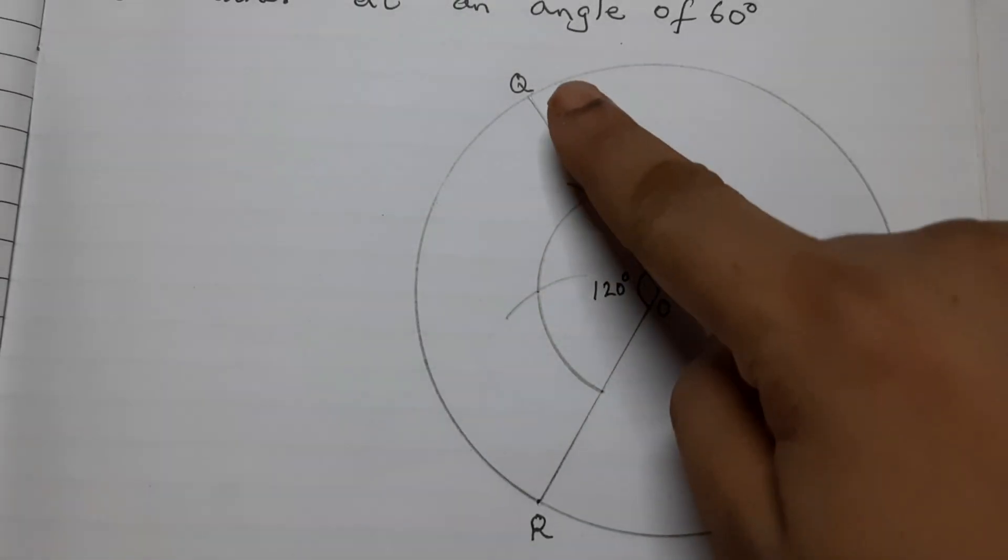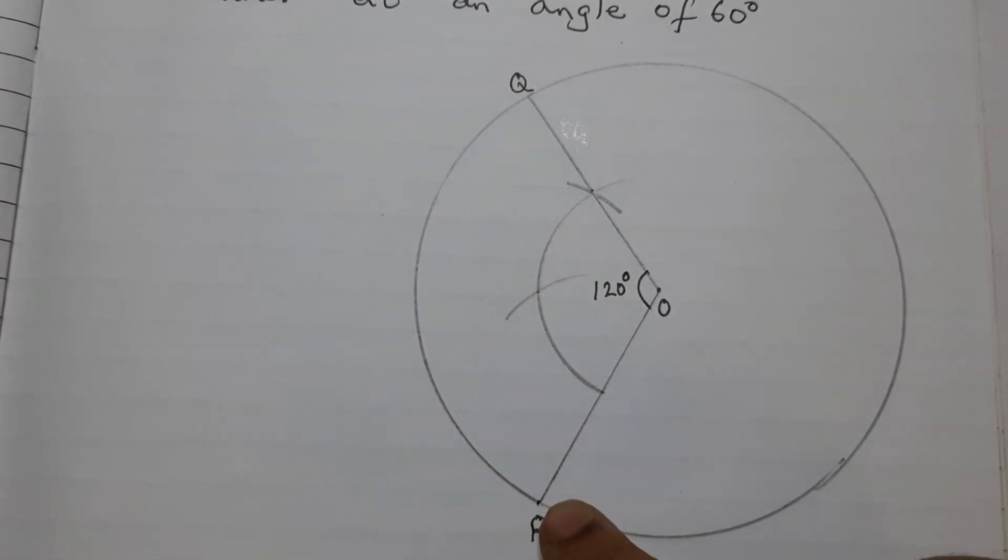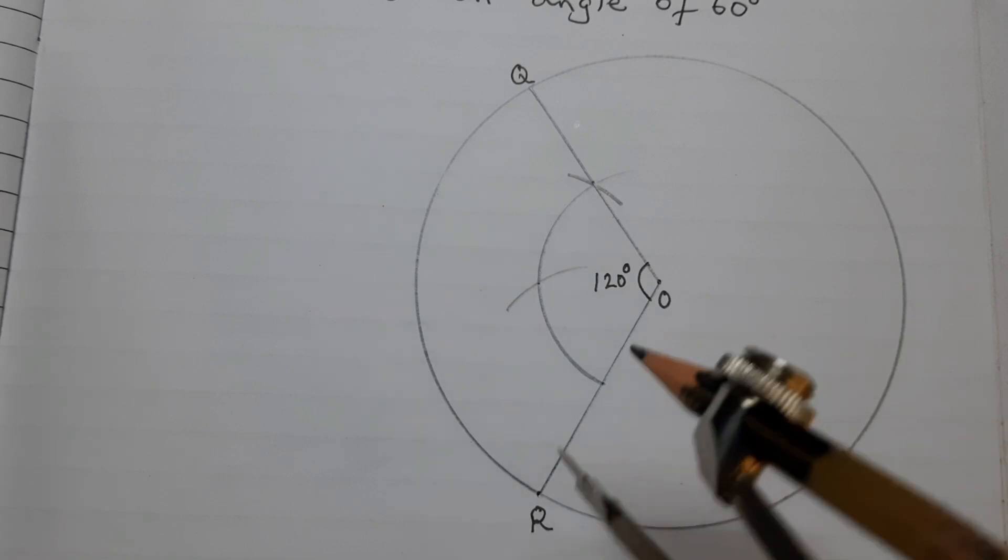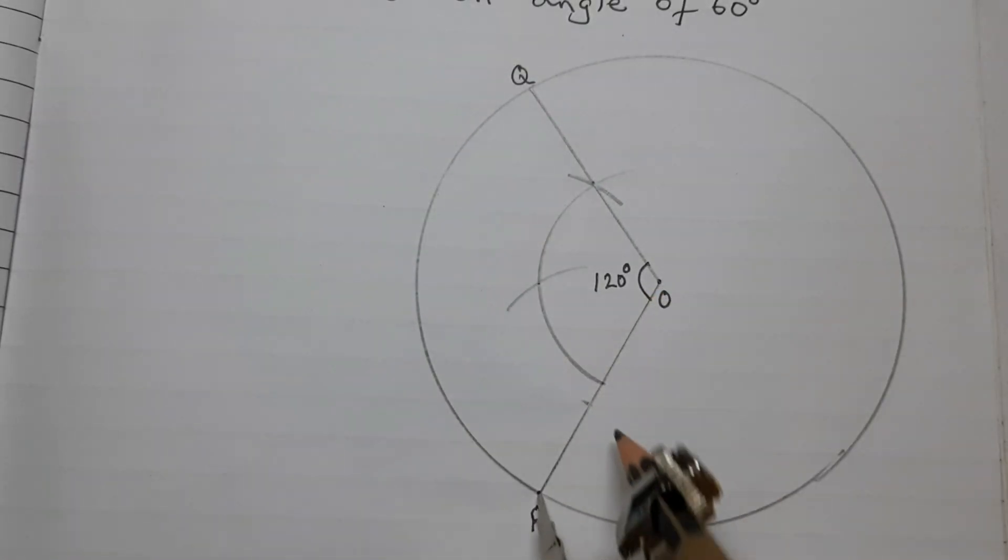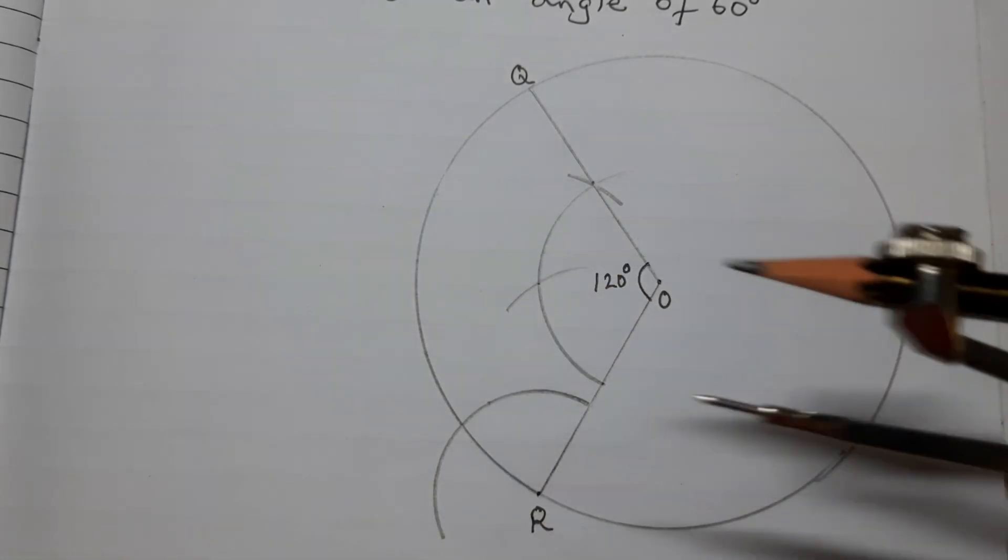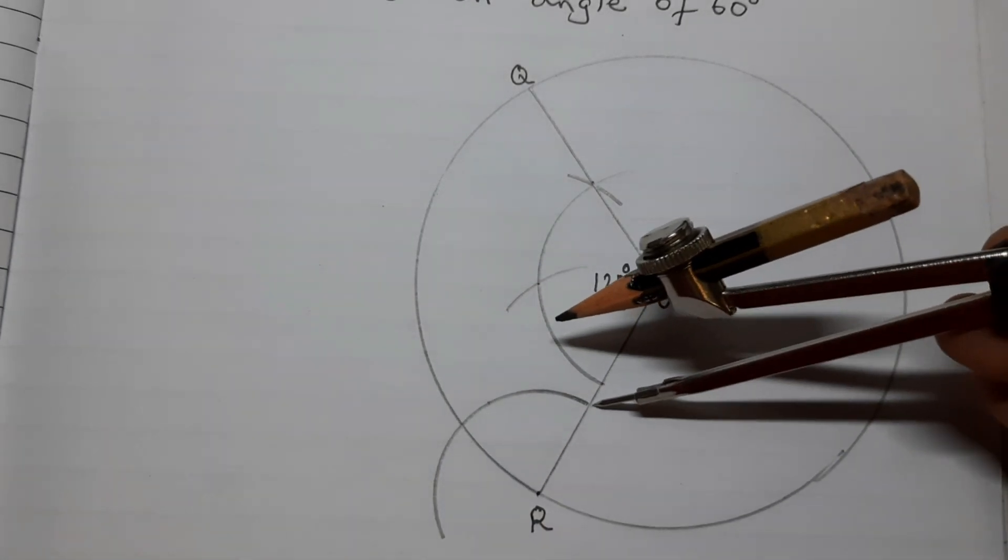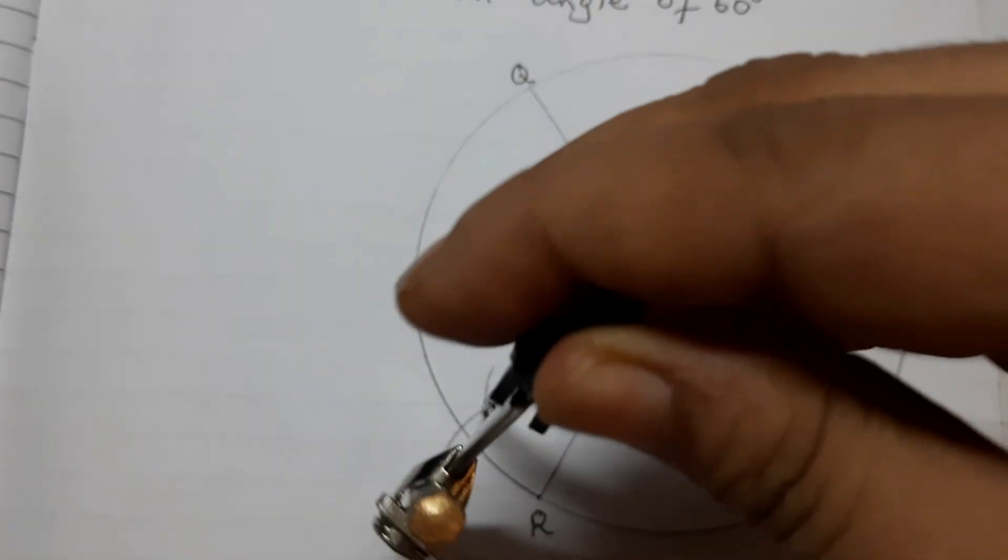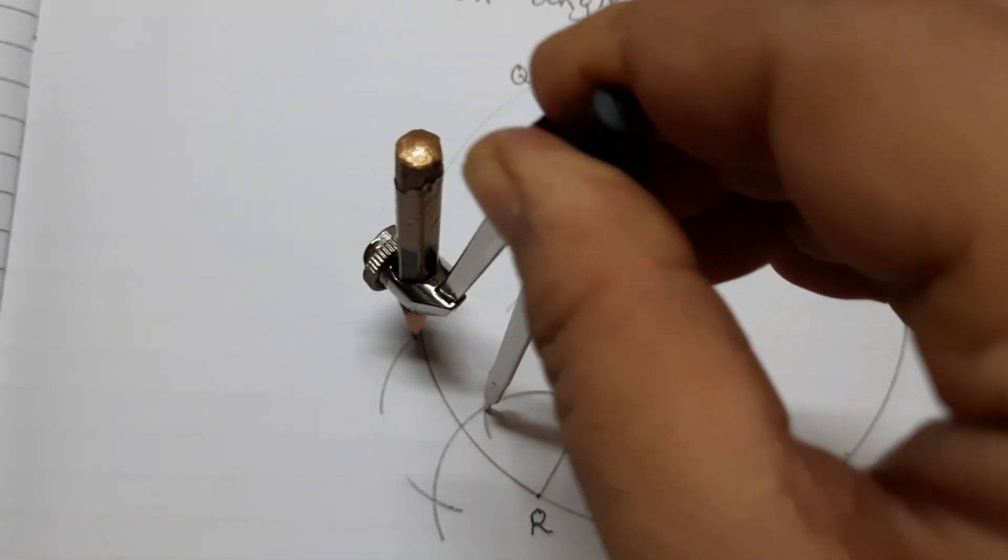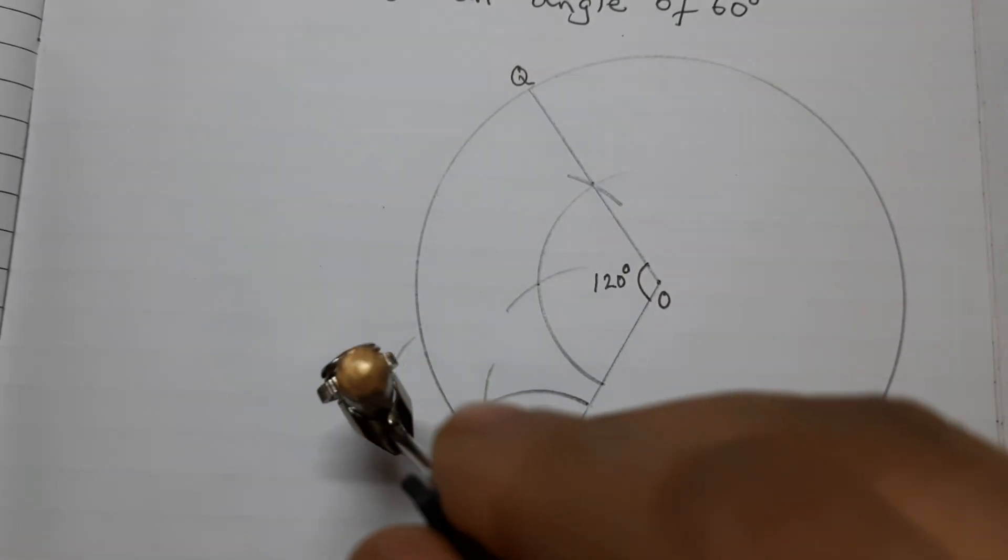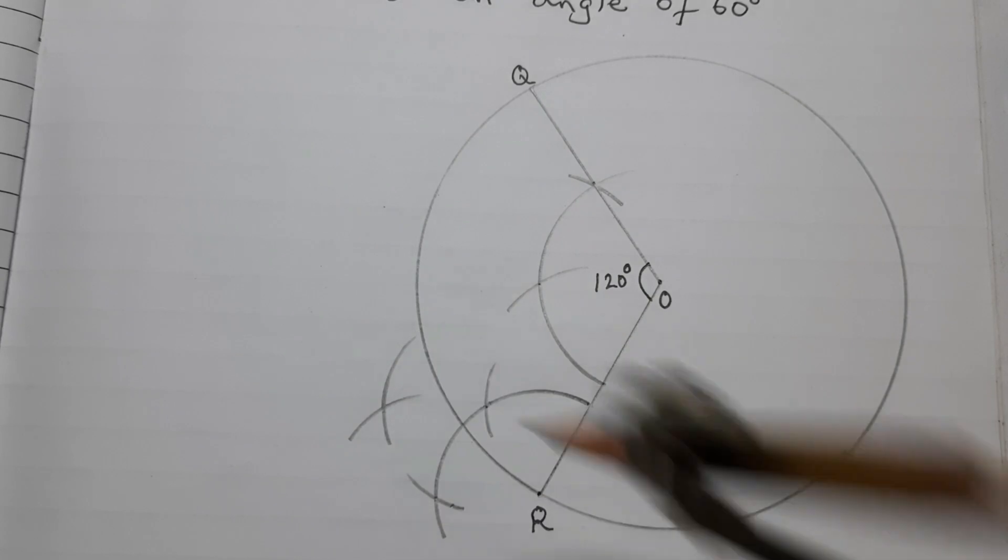At point Q and point R, draw 90 degrees angle using a compass. Take the compass and any radius. Draw an arc at R with pointer at R with the same radius. From this point cut an arc. This is 60 degrees. This is 120 degrees. With the same radius, draw an arc here and another from this point.